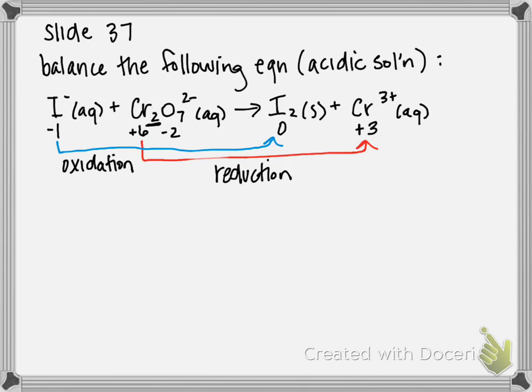So now we're going to split them up into their half reactions. And we had to figure out what was oxidized or reduced to figure out which components go together. So iodine minus is converted to I2, and chromium Cr2O7 two minus is converted to Cr3 plus.